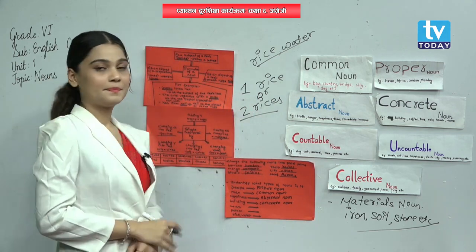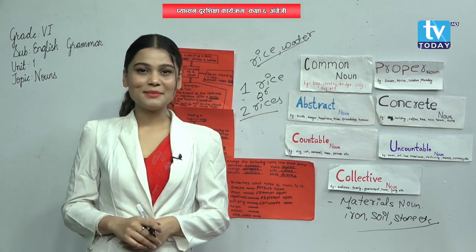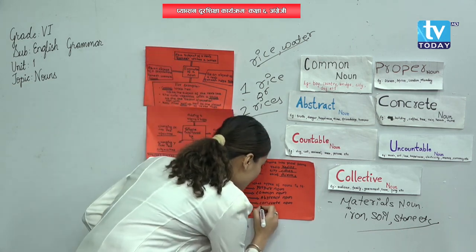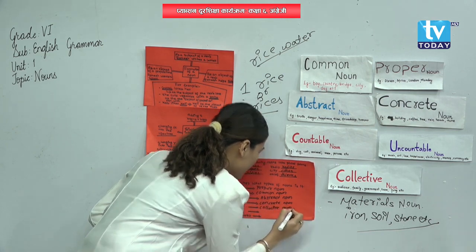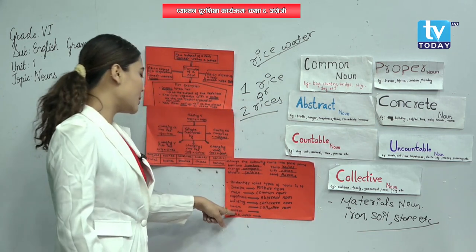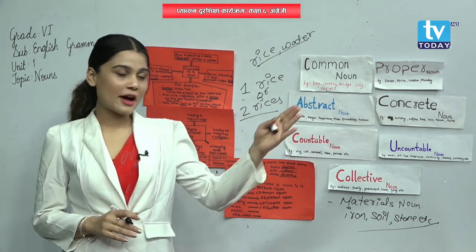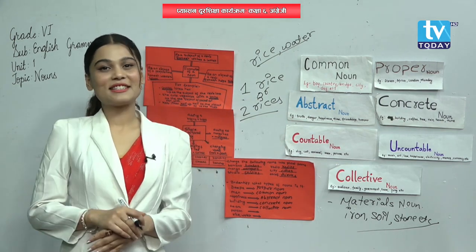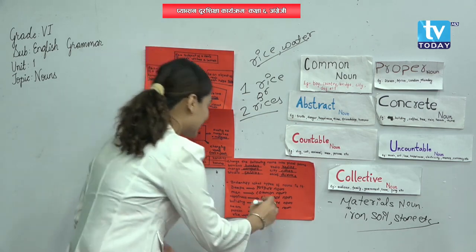Team — more than one people. That means collective noun. Person — we can count it: there are five persons, there are six persons. Yes, that is countable noun.